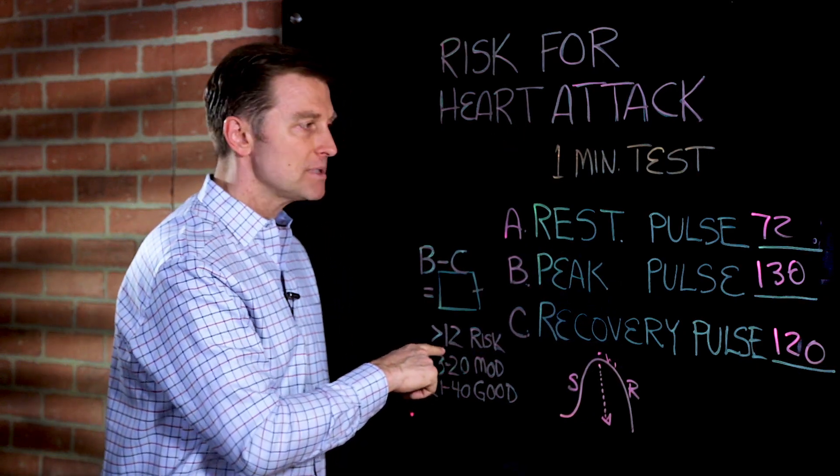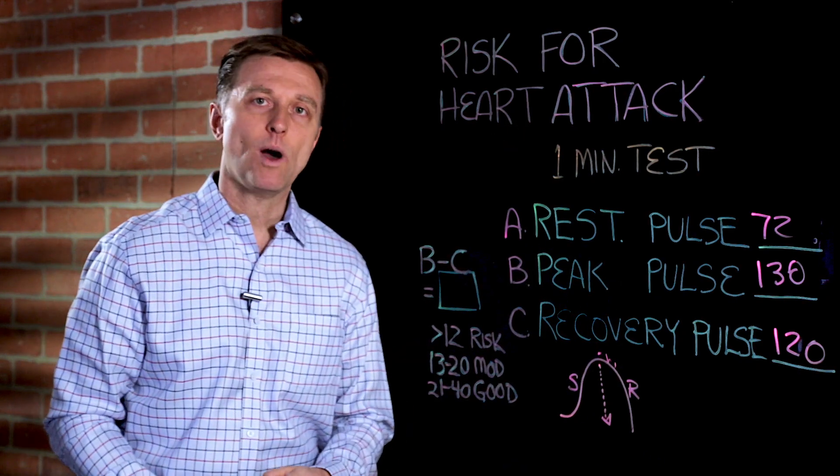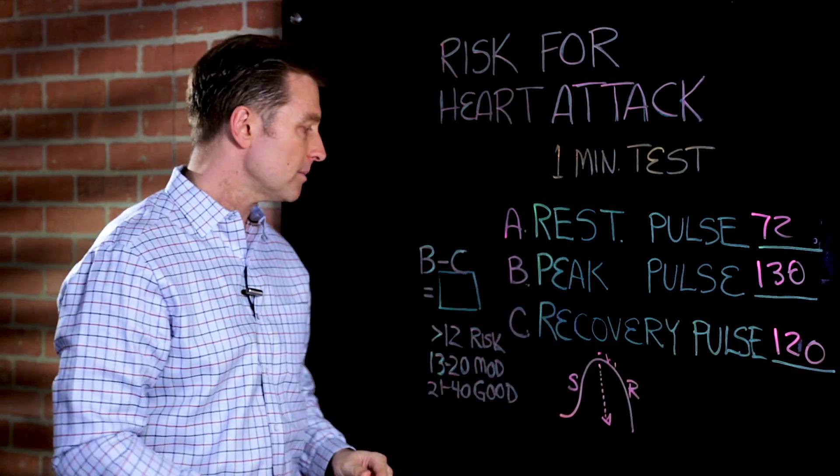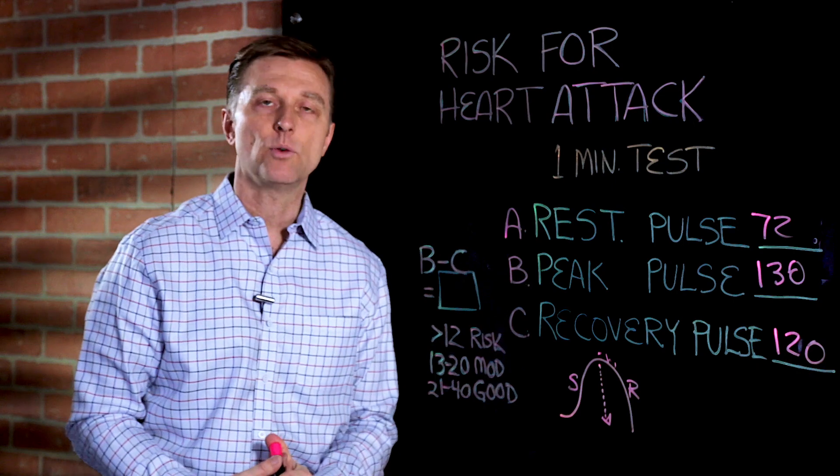Now, if it comes down less than 12 beats, like right here, this is only 10 beats. If it comes down less than 12, you're at risk for a heart attack. This is a real valid way to detect your ability for your body to recover from exercise or stress.